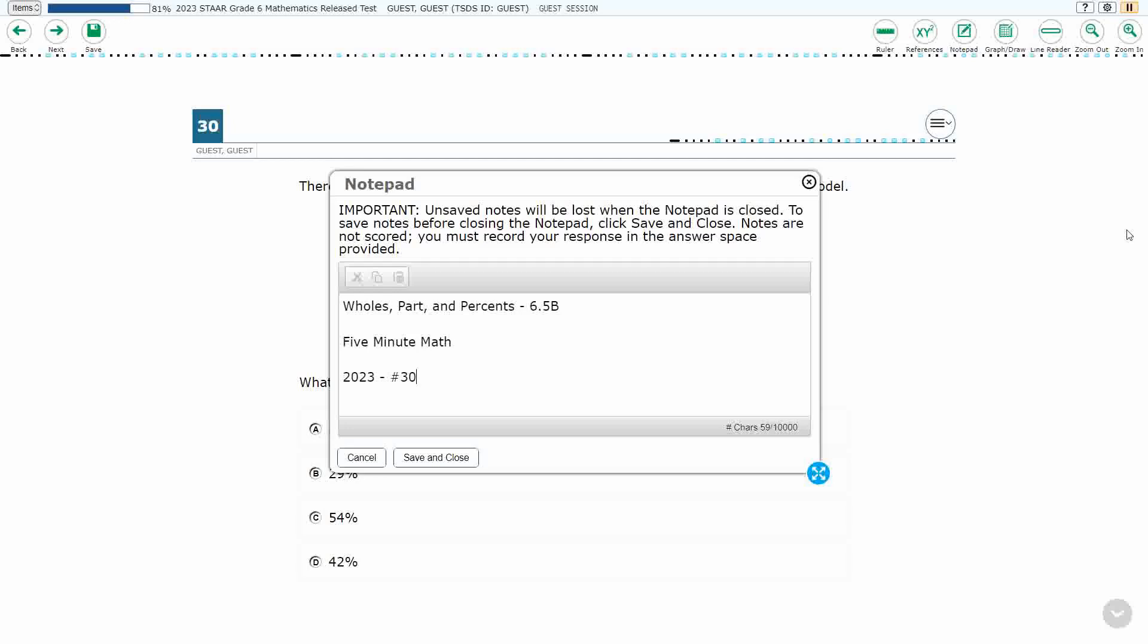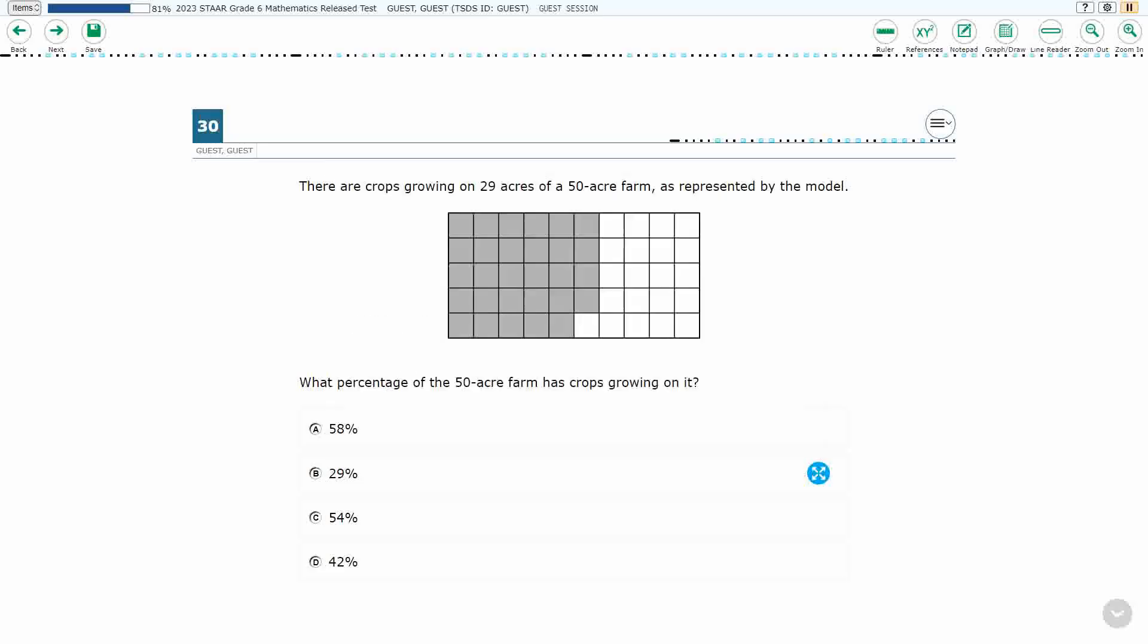Hello and welcome to 5-Minute Math. Today we are looking at the 6th grade concept of Wholes, Parts, and Percents. This is Standard 6.5b in the great state of Texas and we are using item number 30 of the 2023 released star test.